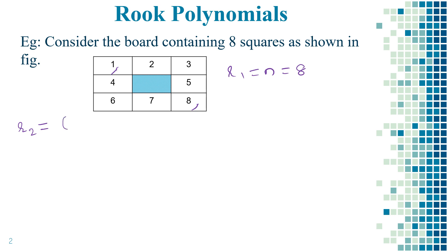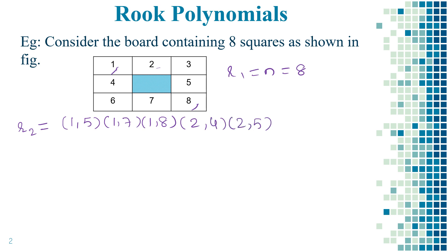So the combinations of placements are (1,5), (1,7), and (1,8). Suppose if you place the first pan over 2, then (2,4), (2,5), (2,6), and (2,8).